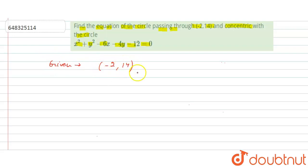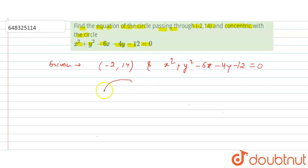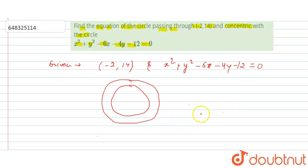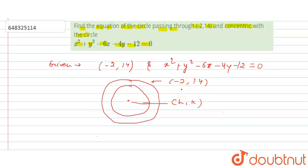We are given the point (-2, 14) and a circle equation which is concentric to the equation of the circle we are going to find out. Before proceeding, we need to discuss what concentric means. Concentric means that circles share the same center, denoted h comma k, for both circles. The point (-2, 14) lies on the circle we need to find. Concentric circles have the same center but can have different radii.